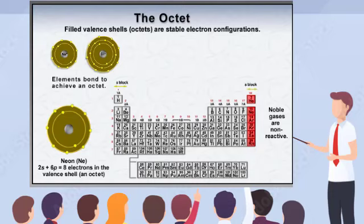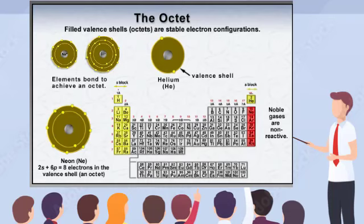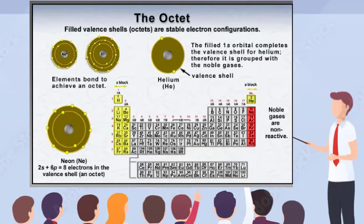Looking at helium, you'll notice it's the only S-block element that is not grouped with the other S-block elements. This is because it has only one S-orbital, and the two electrons in the S-orbital fill its valence shell, which is essentially the first period's equivalent to an octet. Helium, therefore, exhibits chemical properties of a noble gas.